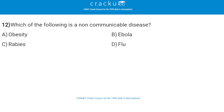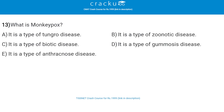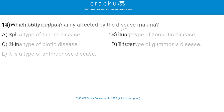Next, which of the following is a non-communicable disease? The correct answer is obesity, that is option A. Ebola, flu, and rabies are communicable diseases, whereas obesity is a non-communicable disease. Next, what is monkeypox? The correct answer is option B — it is a type of zoonotic disease.